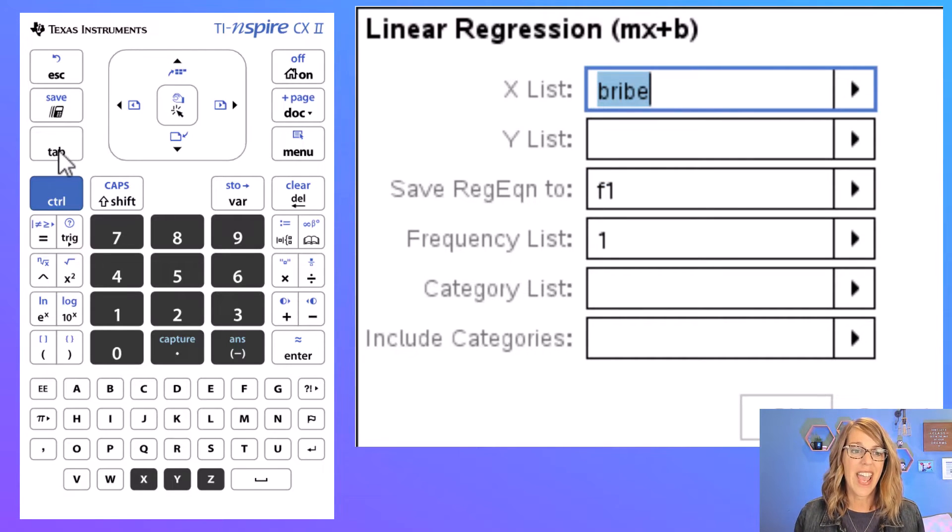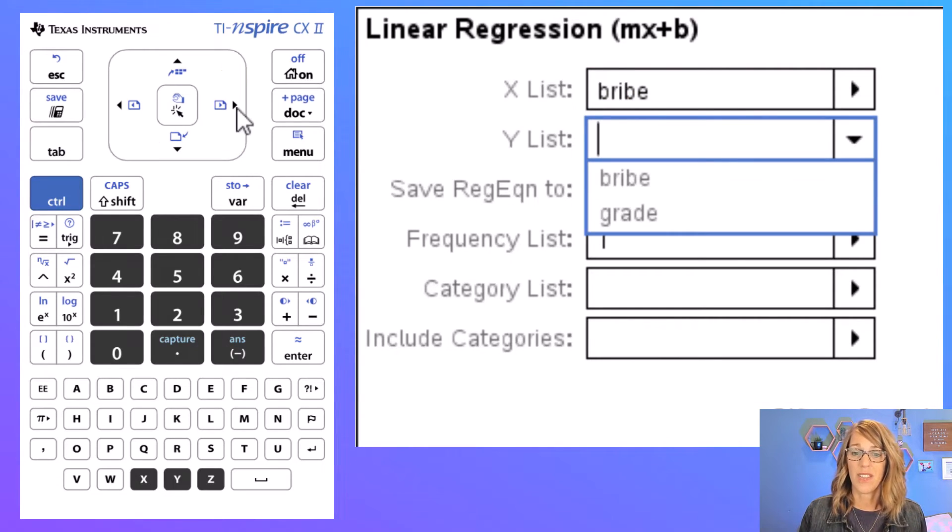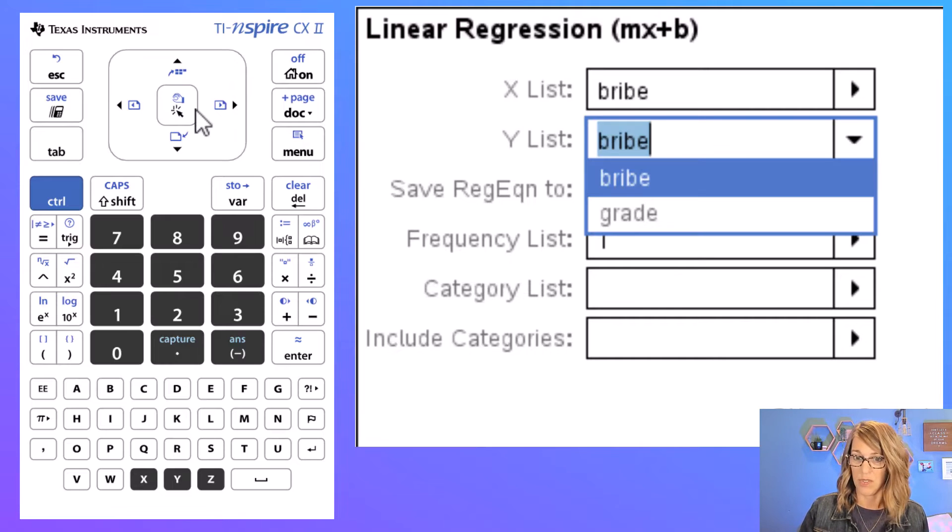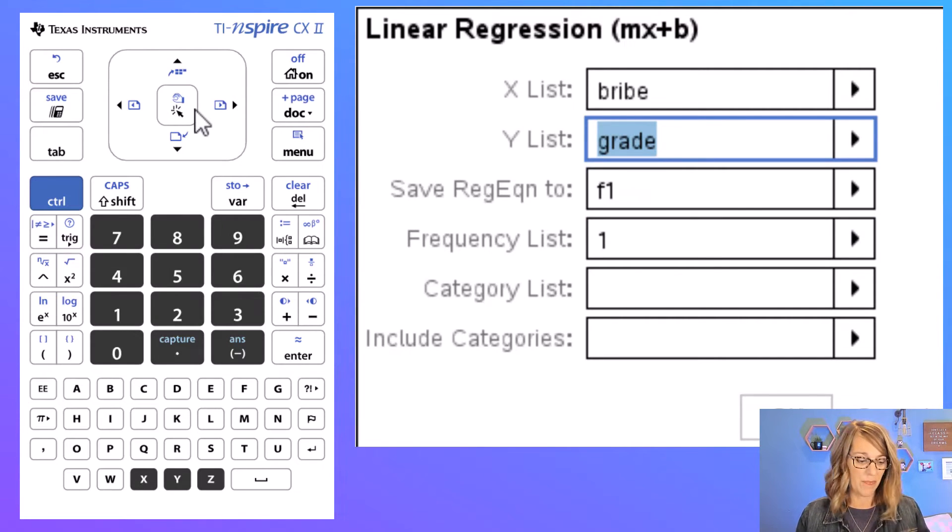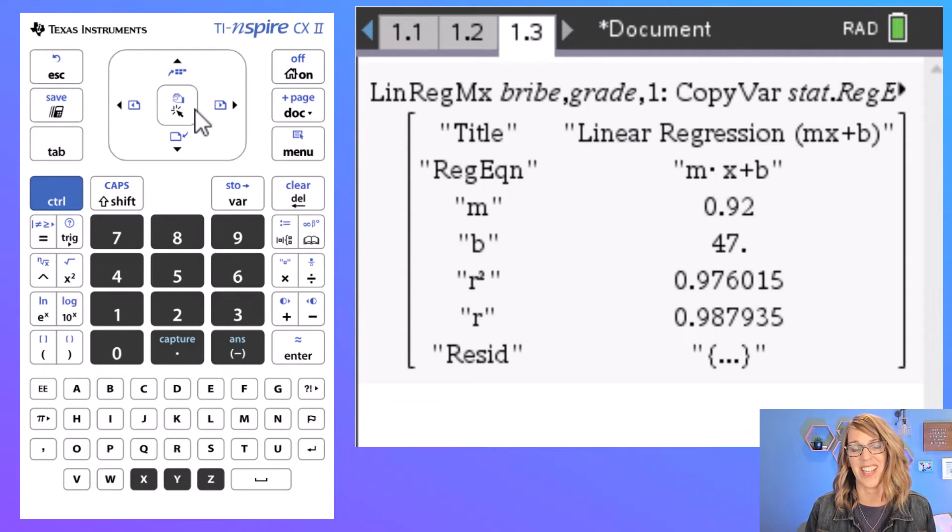Let's go ahead and tab down to the y list. That's my response variable or grade. So hitting the right arrow, I'm going to choose grade and then enter. And then we'll tab all the way down to okay and hit enter.